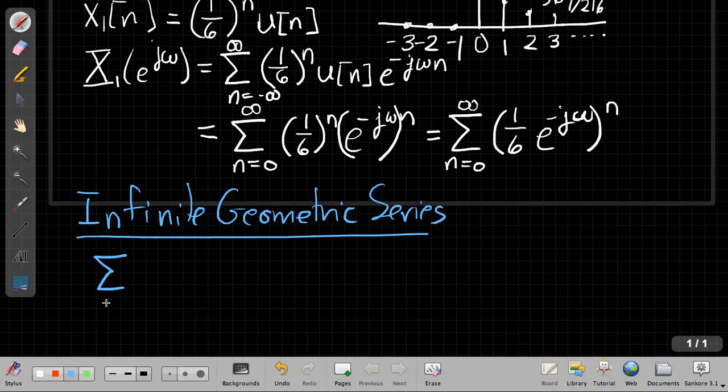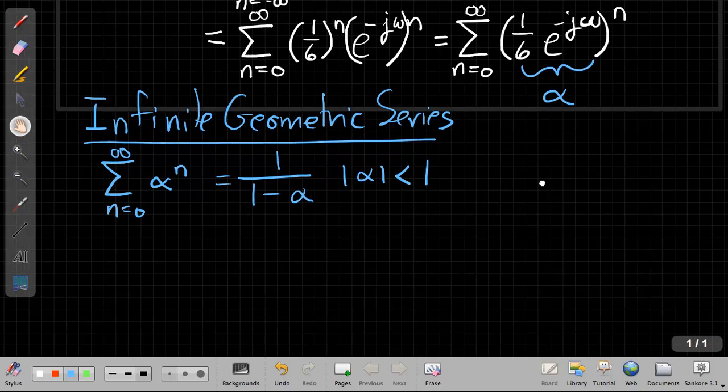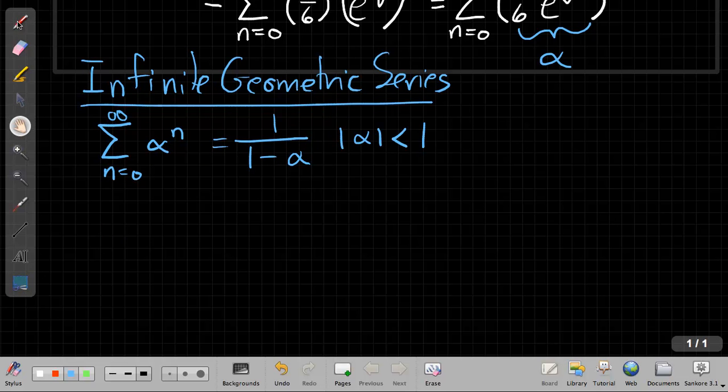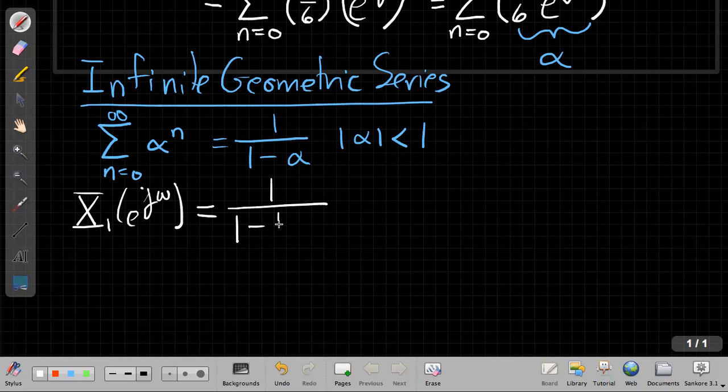that the sum as n goes from 0 to infinity of alpha to the n is 1 over 1 minus alpha. And so looking at this version up here, we say this whole thing here is my alpha. So I have 1 sixth e to the minus j omega. So if I want to keep going now with my original problem, I can say I can write this as x1 of e to the j omega,